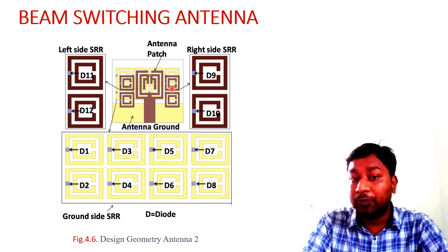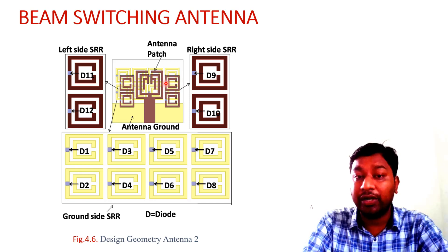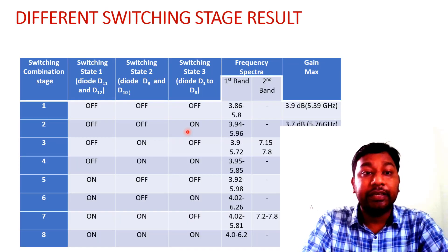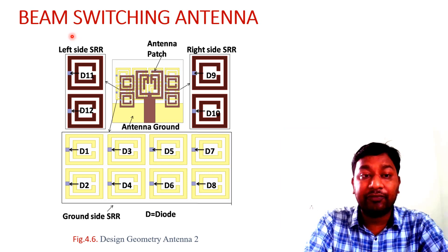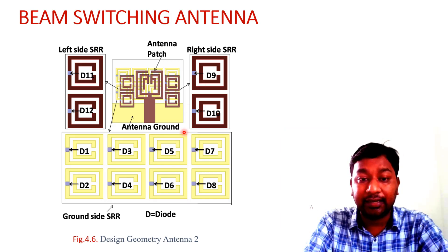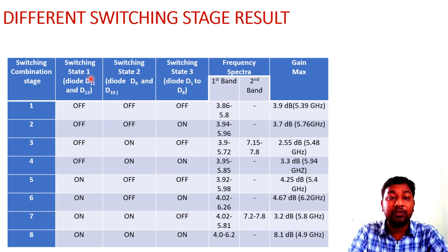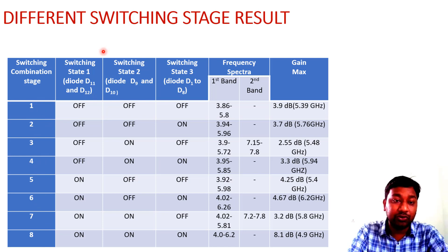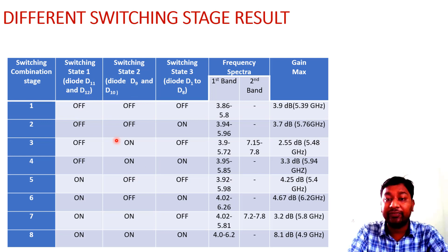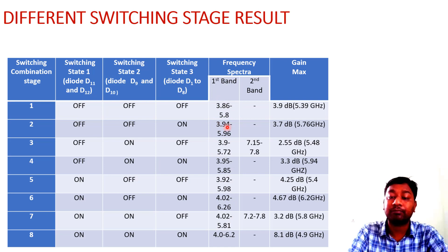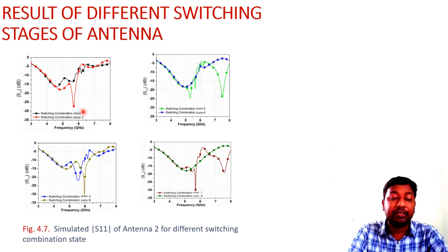We consider three groups: left side SRR, one state, and right side SRR combinations, resulting in eight different switching combination states. For example, switching state one involves diodes D1, D11, and D12; switching state two involves others. In all eight combinations, the antenna band remains covered within our required frequency range.